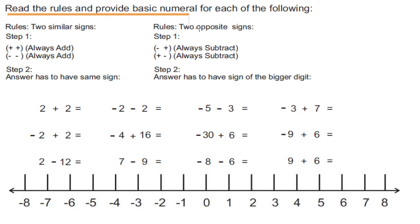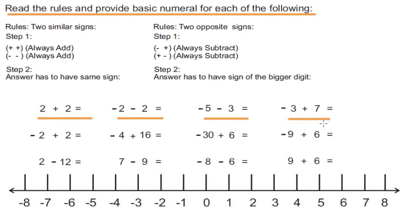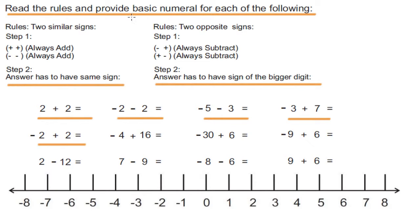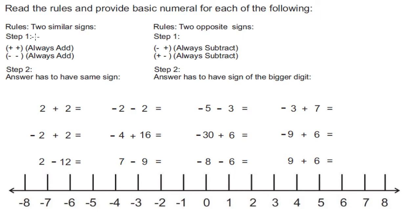Read the rules and provide basic numerals for each of the following. They are simply asking you to add or subtract these two numbers, whatever is required, going by these two rules that are written here. This is rule number one and this is rule number two. Each rule has two steps.